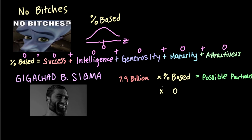So zero times the world population — 7.9 billion — is going to give you the possible maidens of zero. 7.9 billion people on this earth and you still can't even find a single one.